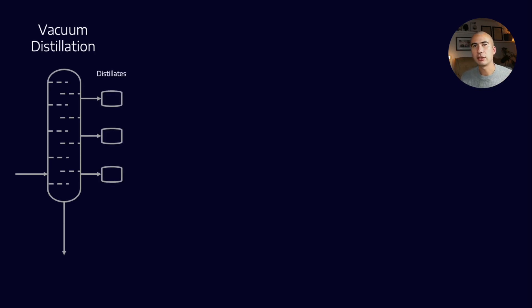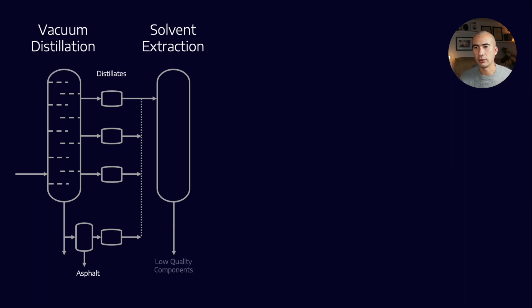Then what we do is we move on to the actual refining process itself. We have different distillate cuts, we do de-asphalting, and then we have solvent extraction. With solvent extraction, we're trying to remove the aromatic content. We use a really highly polar component like a furfural or something like that, and what that does is it helps bind to the aromatics and it pulls them out.